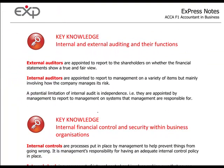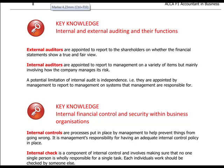Moving to the top of page 32, we have internal and external auditing. External auditors are not employed within the company — they are independent firms appointed to report to the shareholders on whether the financial statements show a true and fair view. Internal auditors, as the name suggests, are appointed by management to report to management internally on a variety of items, with the main focus being how the company manages its risk.